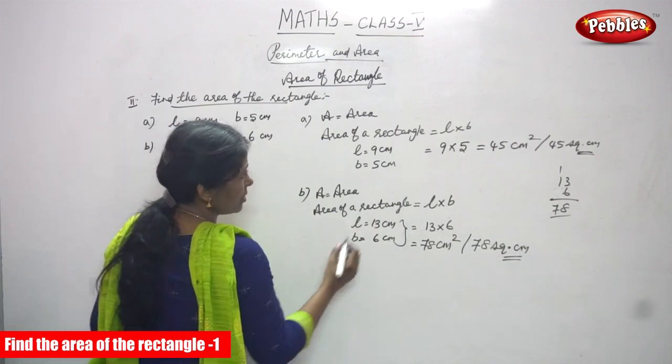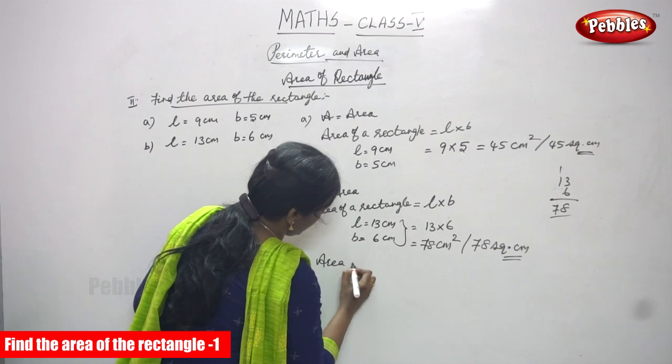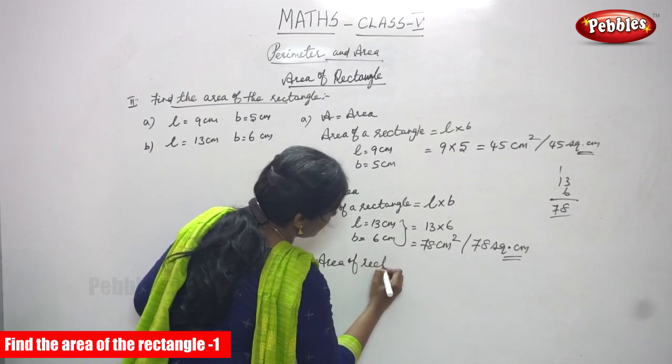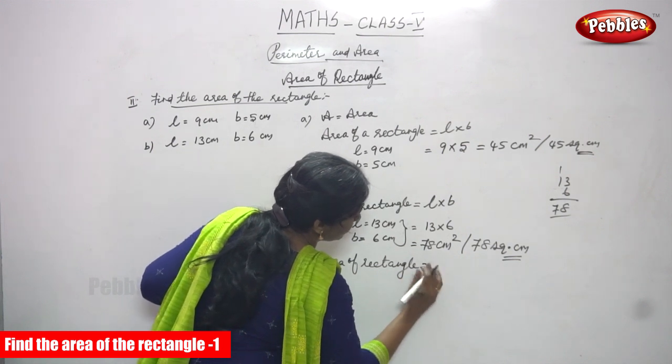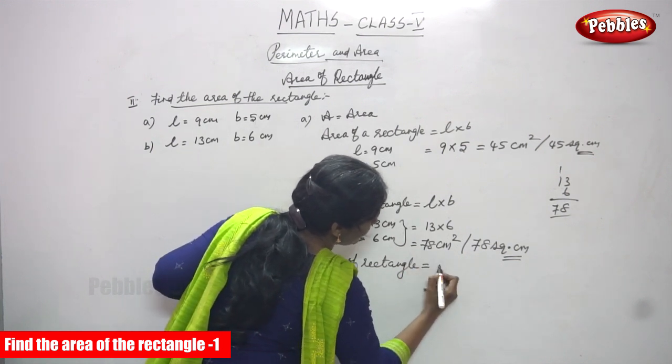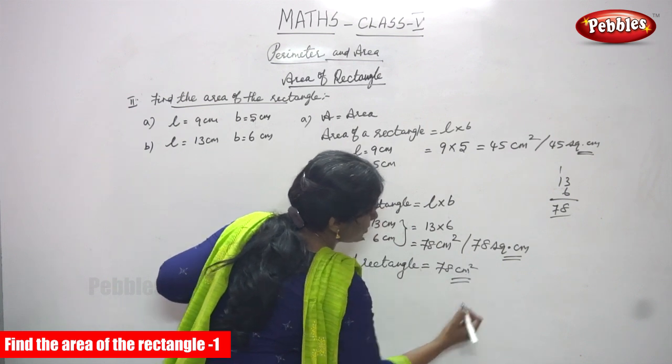So area of the rectangle for this question is, for this question, area of a rectangle is equal to 78 cm squared or square cm.